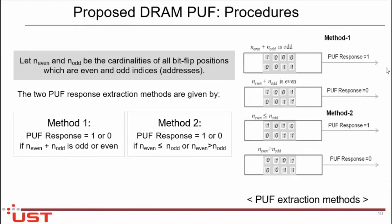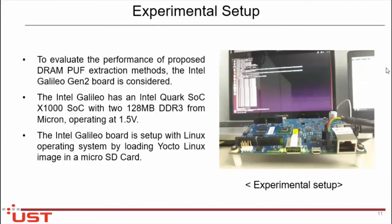The proposed method has two methodologies. The first is that we take the total number of bit flip positions for extracting the DRAM PUF. For the second method, we depend on the even and odd positions of the bit flips. For this process, we arranged the experimental setup using four Intel Galileo Generation 2 boards with DDR3 memory operating at 1.4 volts, tested with the Linux operating system using a Yocto Linux image on a micro SD card inserted into the Galileo board for extracting DRAM PUFs.